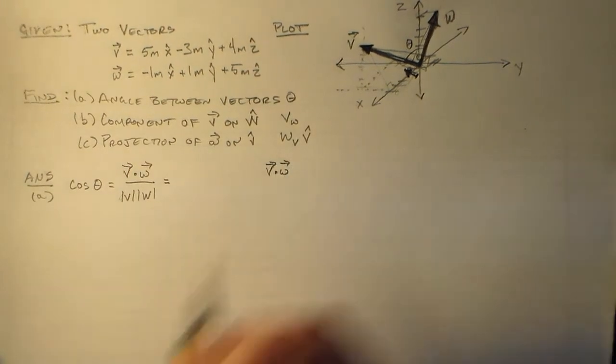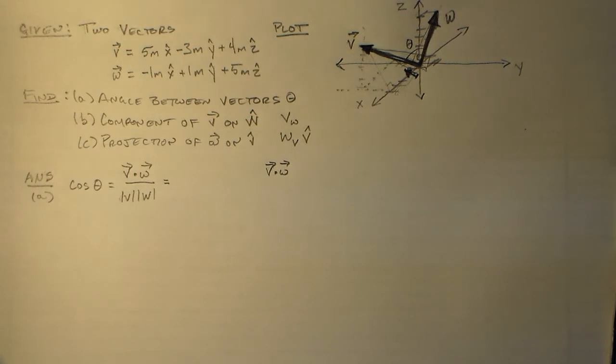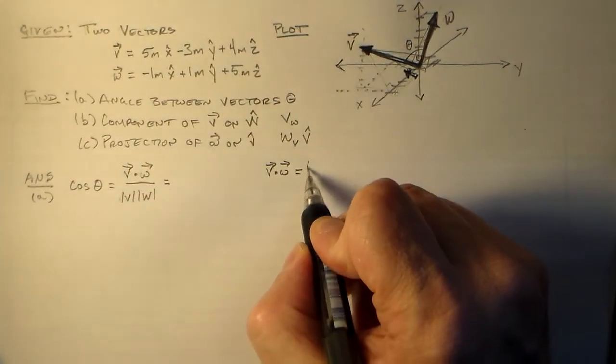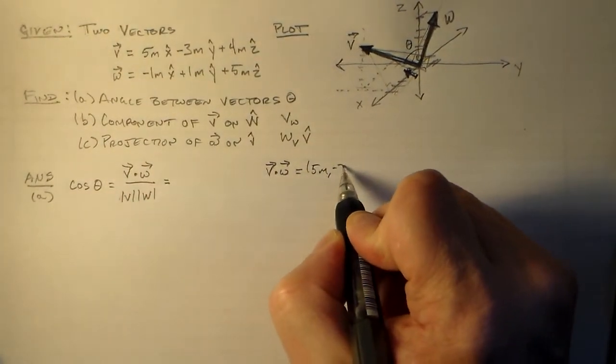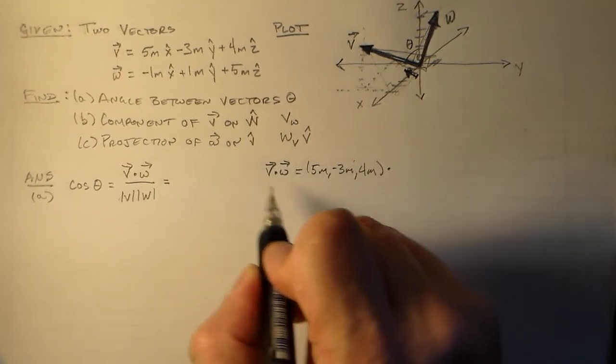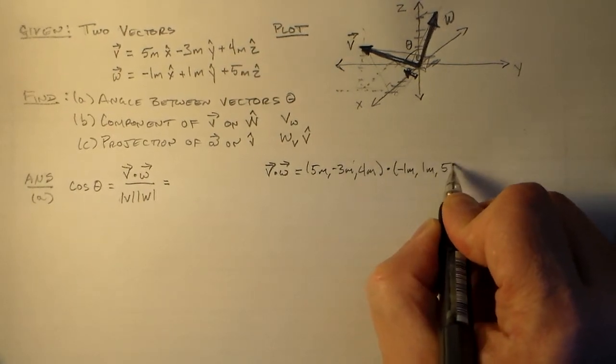So the best thing to do is just find these three numbers, right? Let's see what sort of number would I like to look at. This v dot w, which is v, which is 5 meters, minus 3 meters, 4 meters, dot this w, which is minus 1 meter, 1 meter, 5 meters, right?